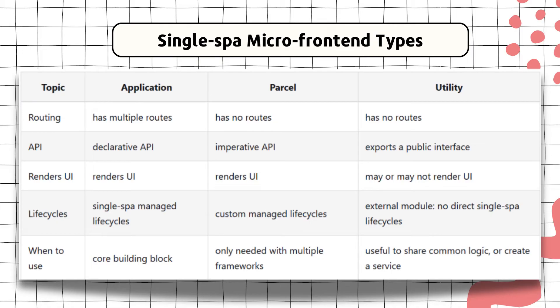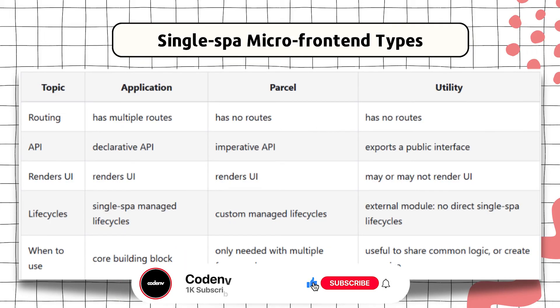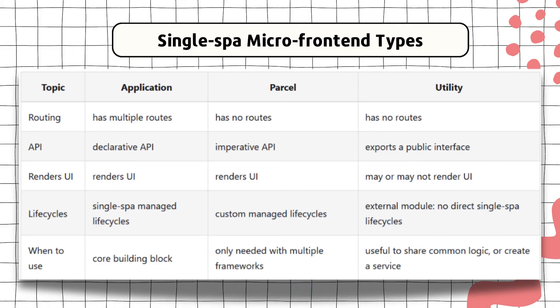Let me give you an example for Utility. Let's say you need to share authentication logic among your other micro frontends — you can define your auth logic inside a Utility micro frontend and share it among others. Another example: a reusable component like a button that you want to share with other micro frontends can be initialized inside a Utility micro frontend and shared among them.